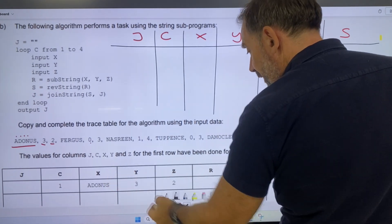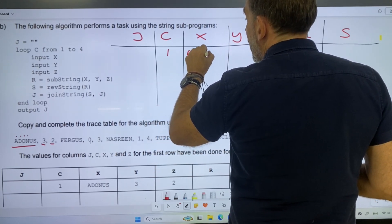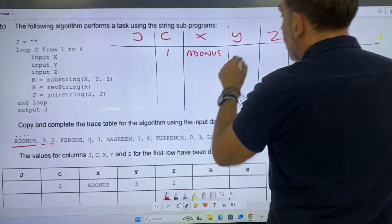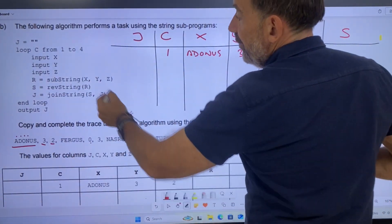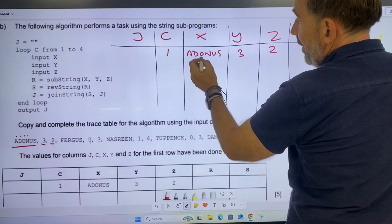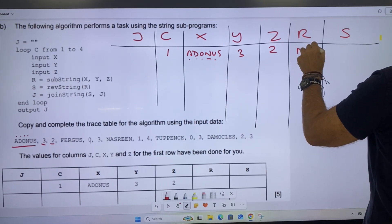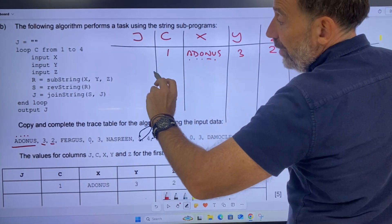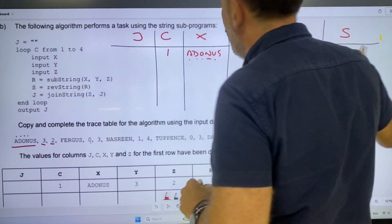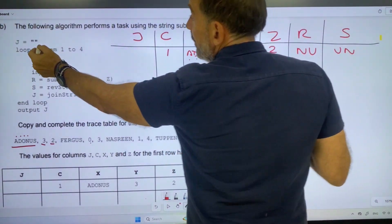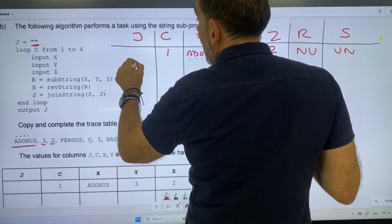The first value has been done for us, so position c 1, Adonis: a, d, o, n, u, s. Adonis has got 3 as y and 2 as z. Now, r is a substring, so we said that we're going to be starting at position 3: 0, 1, 2, 3, and we're going to take two values, n, u. So s is the reverse string, which would be u, n, and joint string is the value of s joined to the value of j. j currently has nothing in it, you can see here, so I'm just going to put in u, n.